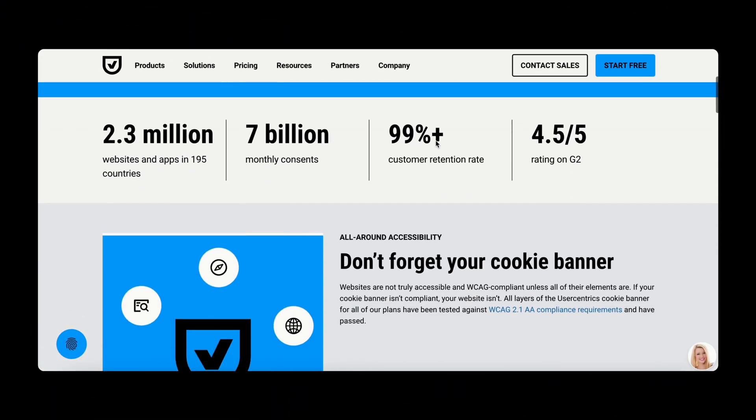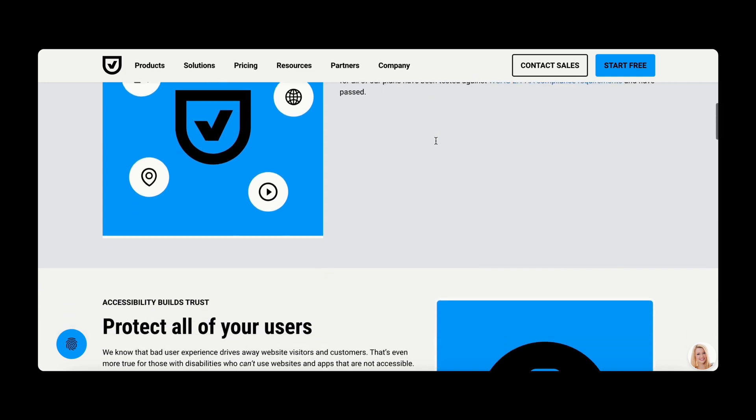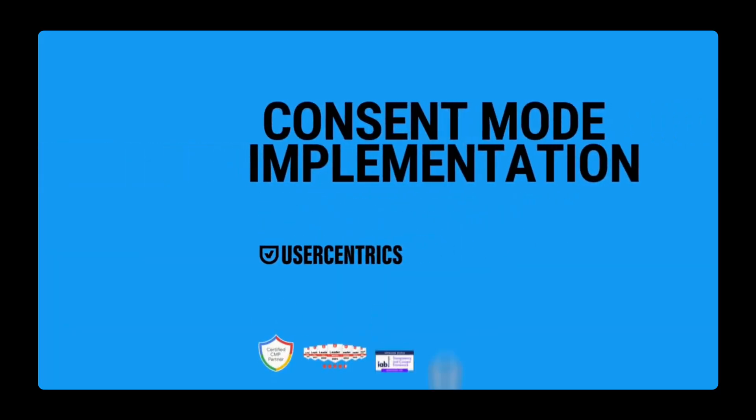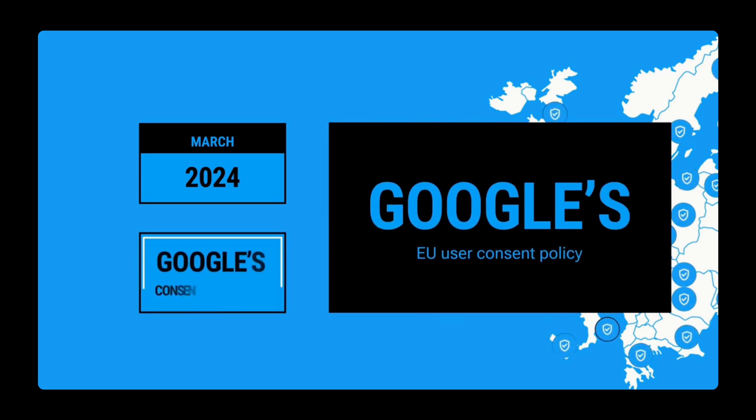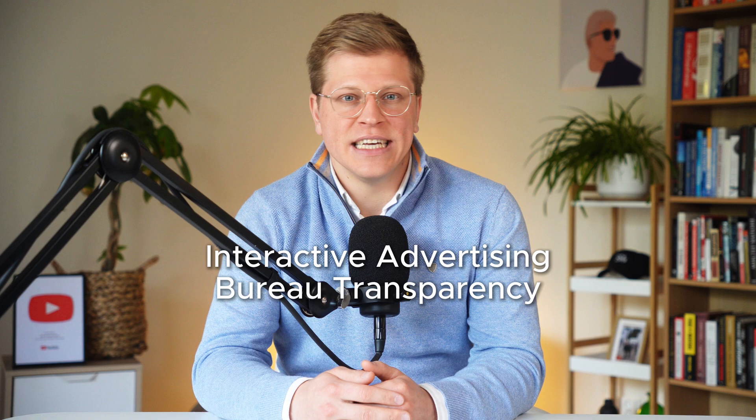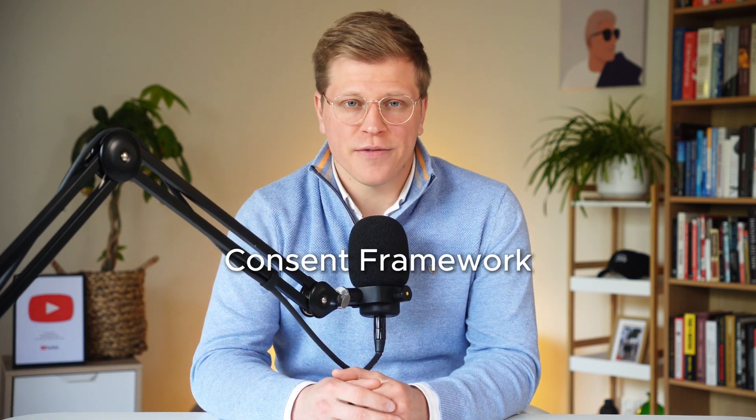There's also accessibility support, so your banner works for people using screen readers or with visual impairments. It follows Web Content Accessibility Guidelines 2.1 and Web Accessibility Initiative Accessible Rich Internet Application Standards. The platform is also certified by Google and supports Google Consent Mode v2, Microsoft UET Consent Mode, and IAB TCF v2.2 — the Interactive Advertising Bureau Transparency and Consent Framework. This means it works perfectly with online ads, marketing tools, and analytics, even when users opt out, so you don't lose as much data and can still measure performance.